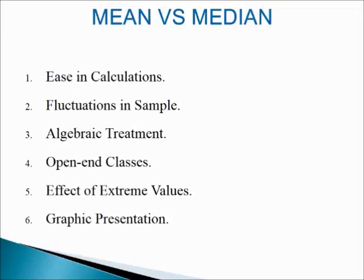It is possible to find out the combined mean but not the combined median. Next, open-end classes: mean cannot be determined in case of open-end distribution, whereas median can be easily calculated. Fifth point, effect of extreme values: median may be more representative than the arithmetic average due to the fact that it is not affected by the values of extreme items.